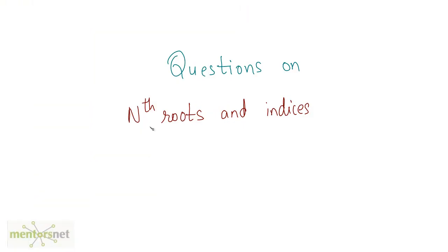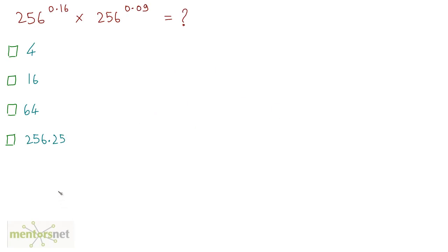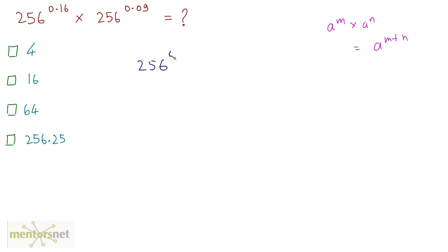Let us solve some more questions on nth roots and indices. For the first question, you can use the formula a raised to m times a raised to n equals a raised to m plus n. So, we can write this as 256 raised to 0.16 plus 0.09.